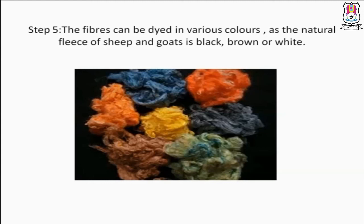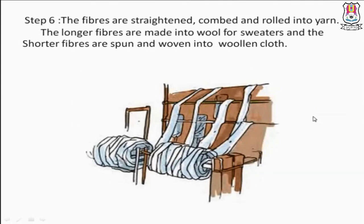Step 6 — Rolling: the fibers are straightened, combed, and rolled into yarns. The longer fibers are made into wool for sweaters, and the shorter fibers are spun and wound into woolen cloth. Jo sabse lambe fibers hote hain woh sweaters banane ke liye use hote hain, aur jo chote chote fibers hote hain unse woolen cloth banate hain.